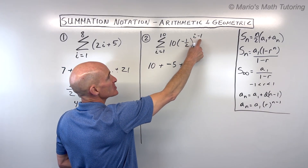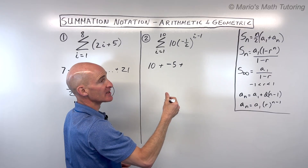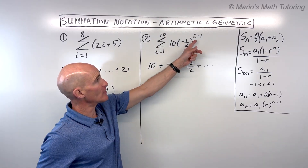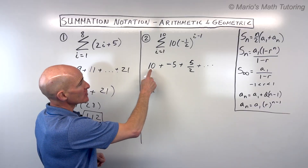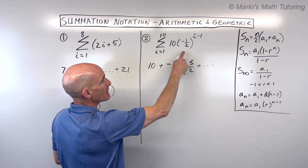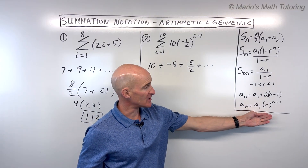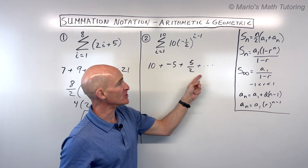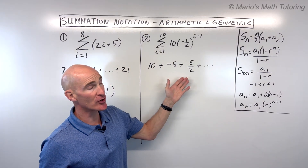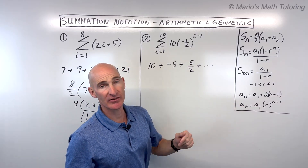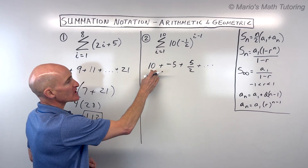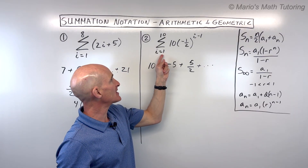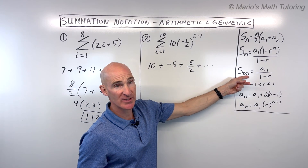If we put three in, three minus one is two, negative one half squared is one fourth, one fourth times 10 is ten fourths, which reduces to five halves, and it keeps going until we get to the 10th term. Notice we're multiplying by negative one half each time — that's your ratio. That r value is what we're multiplying by each time to get to the next term. When it's geometric like this, we're going to use the formula for a finite geometric series, meaning there's a fixed number of terms. In this case we just have 10 terms.